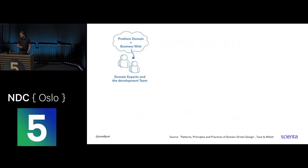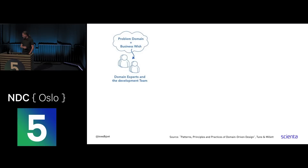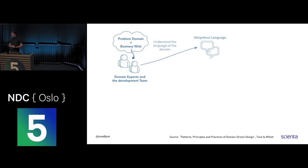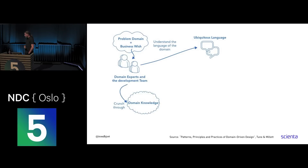I nicked this one from Nick Tune's book. You have a problem domain and the business wants to make changes. The domain expert and developers sit together and figure this out — what do we have and what do we want? In doing that they create the ubiquitous language together. That doesn't mean the business has all the rights to define those terms — it should be defined together. Developers have a lot of good input. Maybe even the subject matter expert is a developer who's been around for ages.